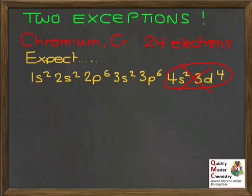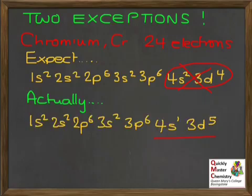You're just going to have to memorize this for chromium that there's something different. What actually happens is the following. Instead of the expected 2 in the 4S there's only 1 and then we put 5 in the 3D instead. In other words, the 4S has 1 less than anticipated and the 3D has 1 more than anticipated. In the A2 year, you look at that a bit more. We can say that this is actually more stable in energy terms to have a half full D subshell. But you don't really need to go into that at AS.